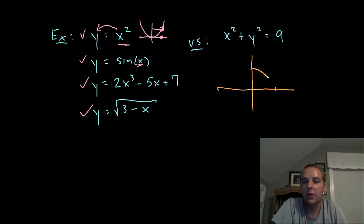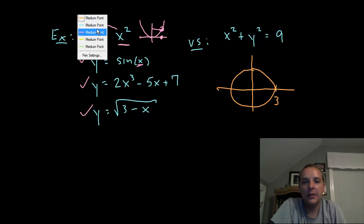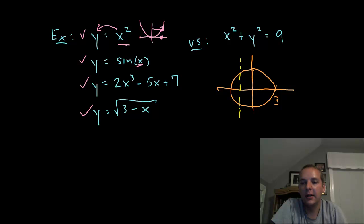Hopefully we know this. This is the equation of a circle: x squared plus y squared equals r squared. So we have a very well-known formula there.